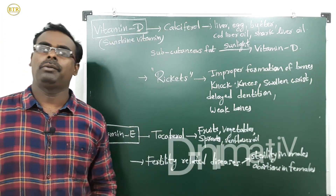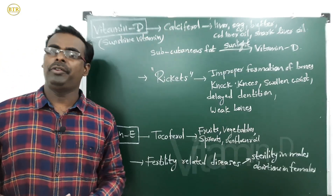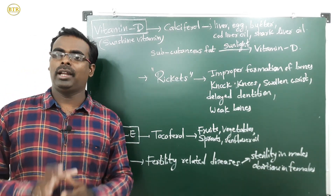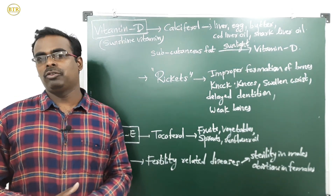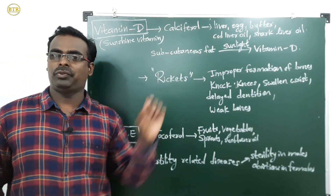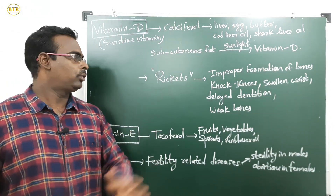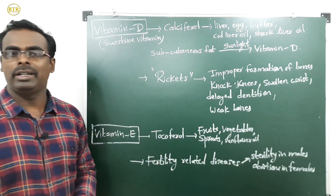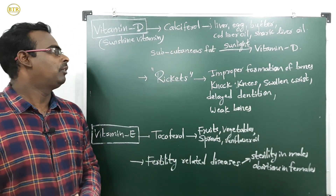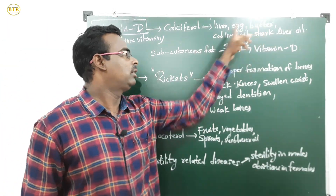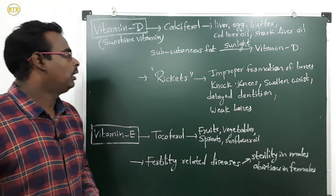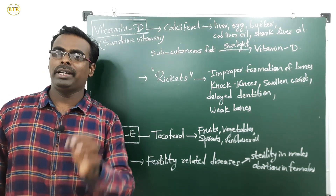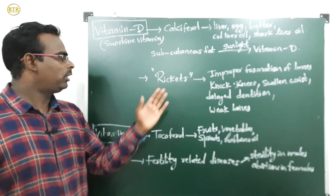The second fat-soluble vitamin is vitamin D, with scientific name calciferol. Vitamin D is also called the sunshine vitamin because subcutaneous fat beneath the skin converts into vitamin D in the presence of sunlight. Vitamin D is available in liver, egg, butter, cod liver oil, and shark liver oil. Deficiency causes rickets disease.